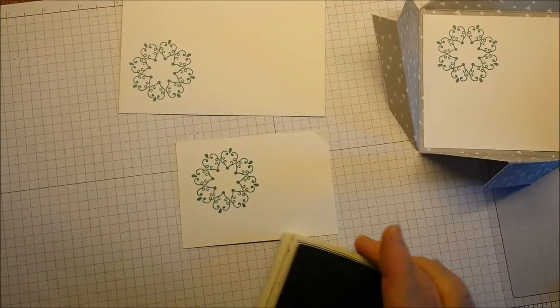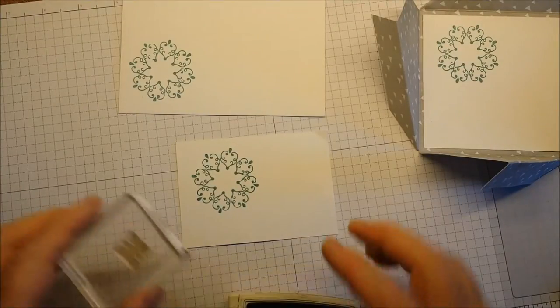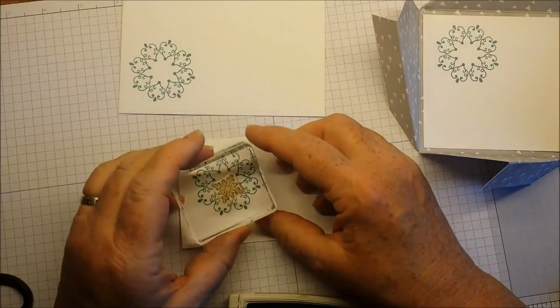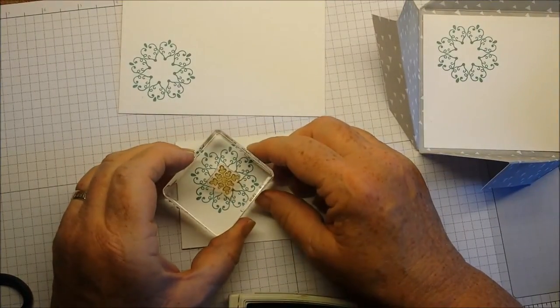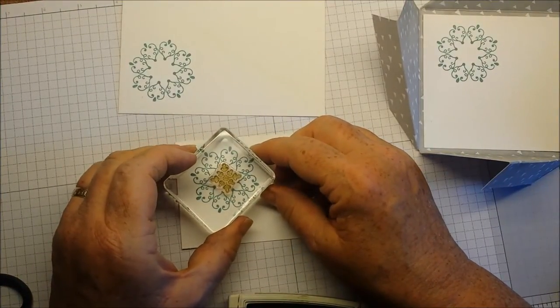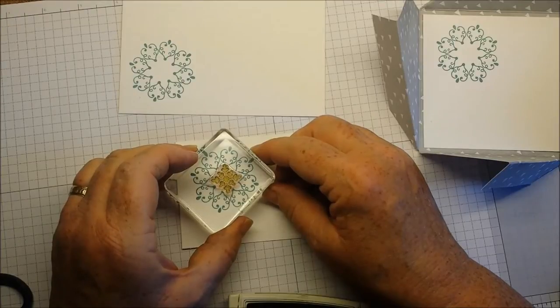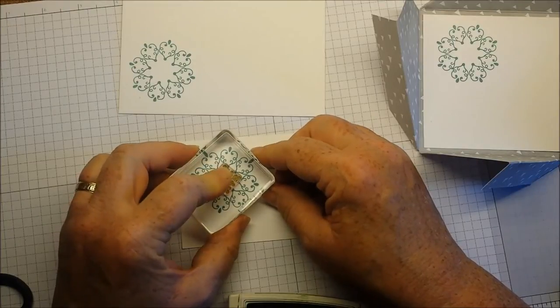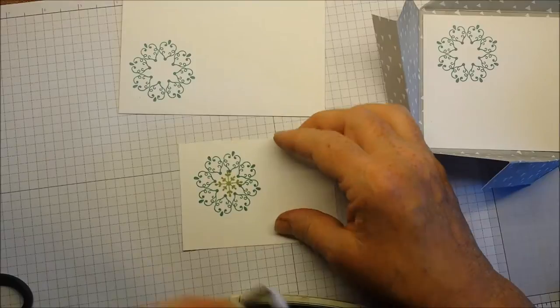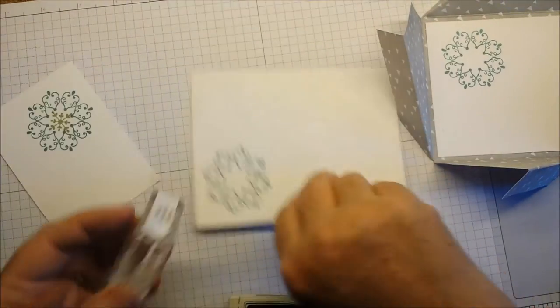Now I'm going to stamp the smallest snowflake in the center of that. And if I could get my head down here, I could see it a little bit better. But with the photopolymer stamps, even not getting right over there, I can get pretty close to the center.